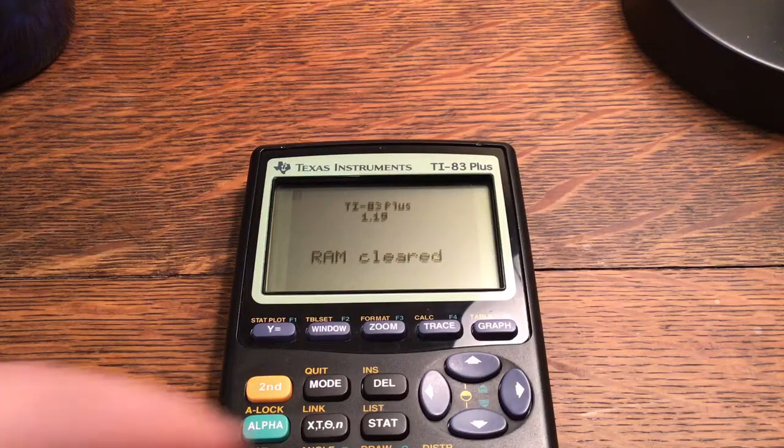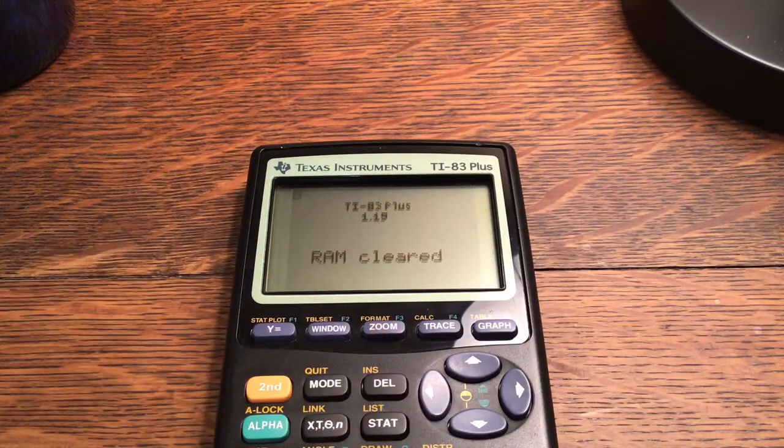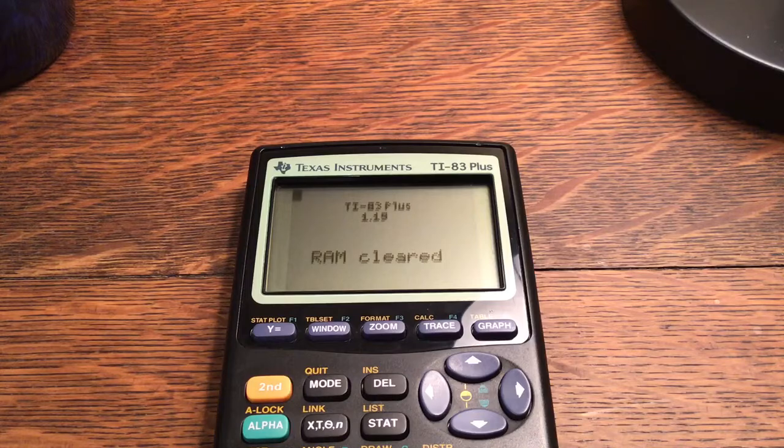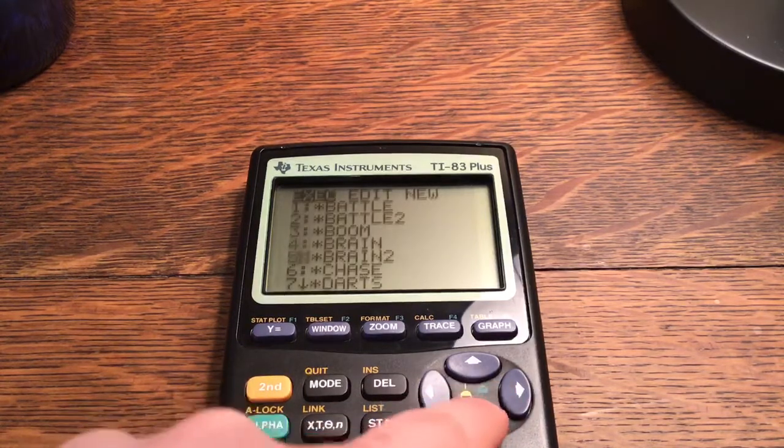So what we did is we took our programs, put them from RAM into the ARC so they're safe. So we can reset. It'll say RAM cleared. As long as you had your programs and they had the star in front of them, they will all be saved.